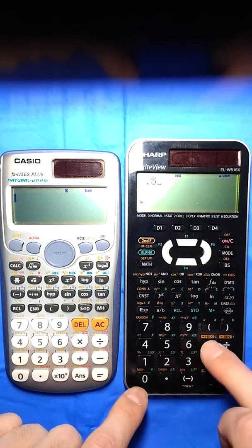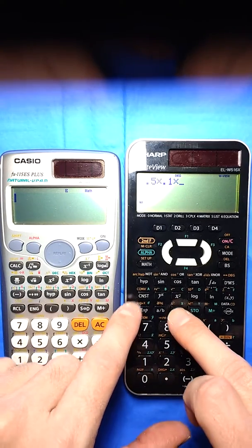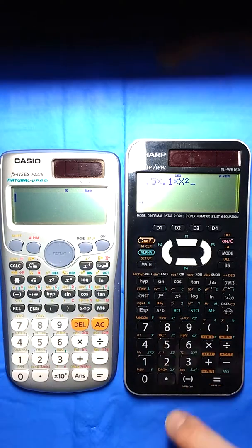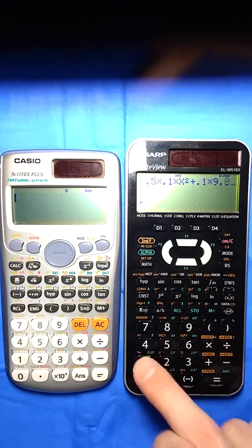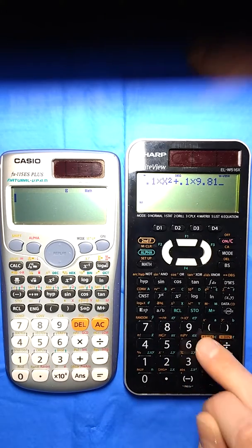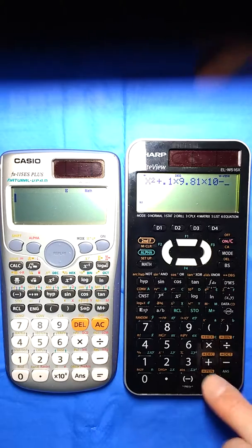So I have one half times my mass, which was given, times the velocity squared—that's what I'm trying to find—plus the mass times gravity times the height, which was given.